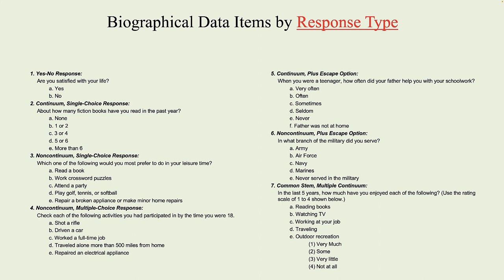This response format is taken further in item four, in which you are allowed to check all that apply to the question. For example: shot a rifle, driven a car, worked a full-time job, traveled alone more than 500 miles from home, repaired an electrical appliance. On item five, we expand on the format by providing essentially a none-of-the-above option. Item six is a non-continuum in that you can check one or sometimes two answers, but you also have the so-called escape option. Item seven is essentially five little versions of item two, grouped together under a common item stem — here 'in the last five years' — saving a lot of space.